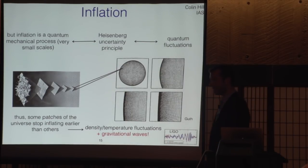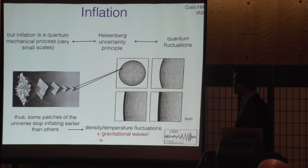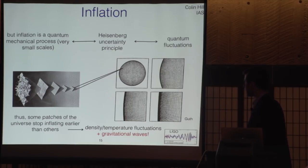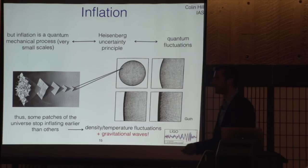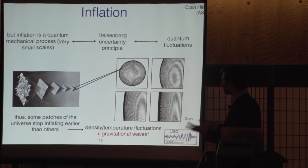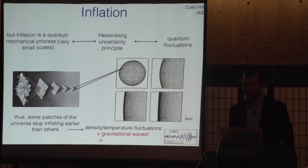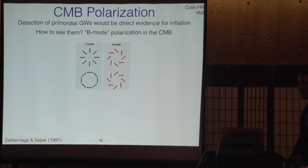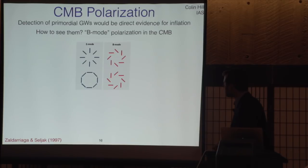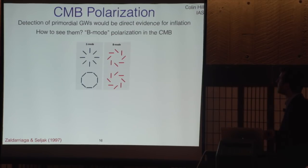Moreover, inflation makes a unique prediction for an additional signal we can look for in the data: a gravitational wave signal. This inflationary expansion is violent and produces disturbances in space-time itself, leaving a gravitational wave signal we can look for. You may have heard about gravitational waves from the LIGO experiment, but the LIGO detection was of gravitational waves from merging black holes and neutron stars, whereas what we're talking about are gravitational waves from the beginning of the universe — long wavelength waves of order the size of the universe. This is the holy grail of experimental CMB research.